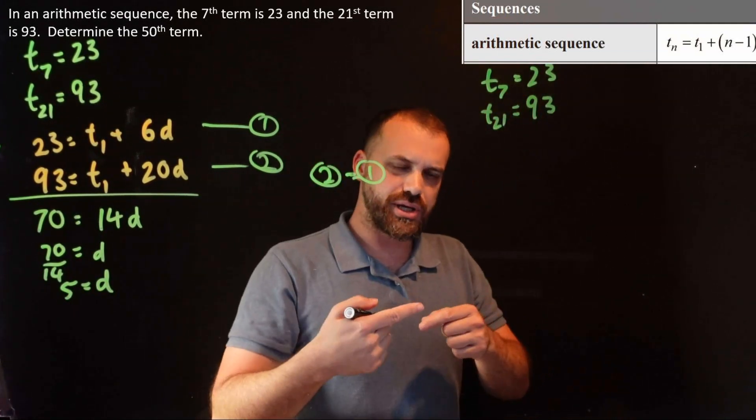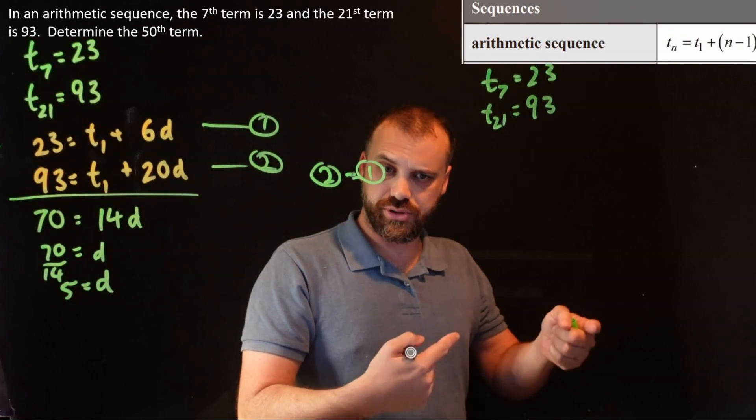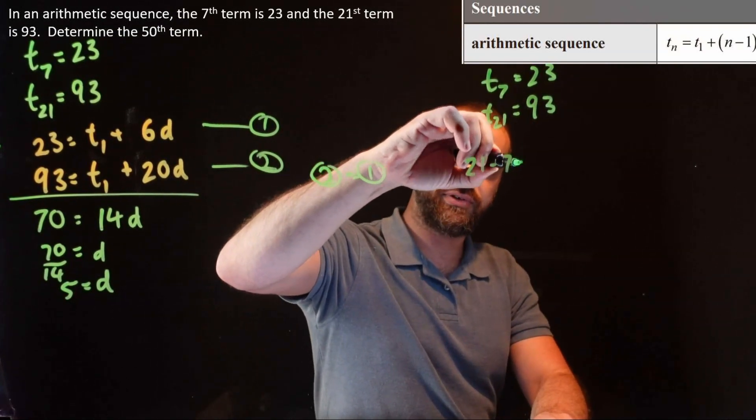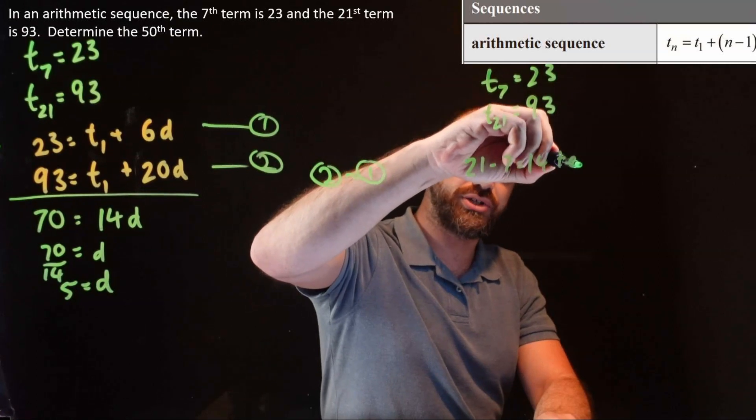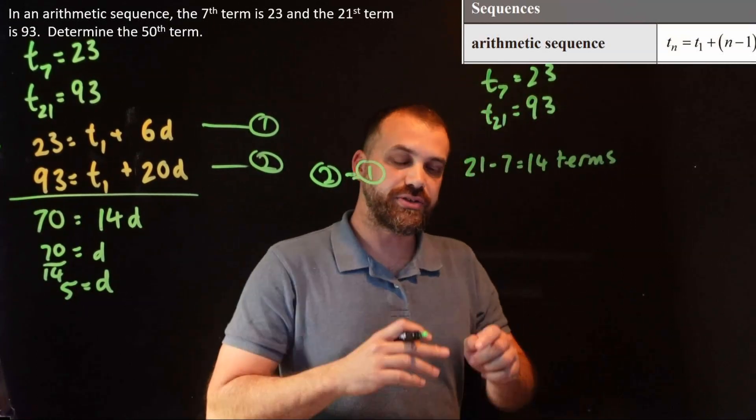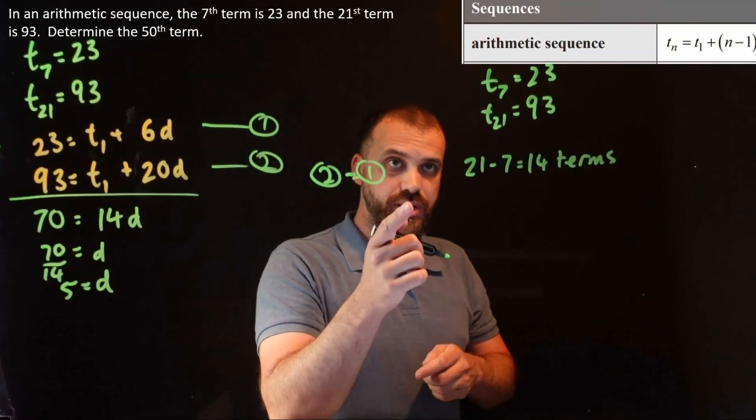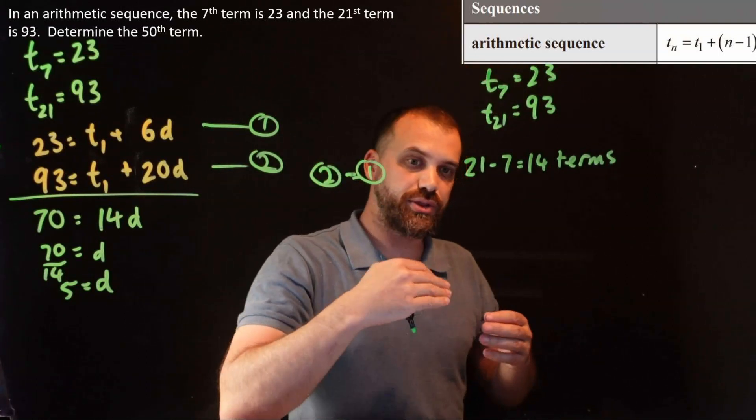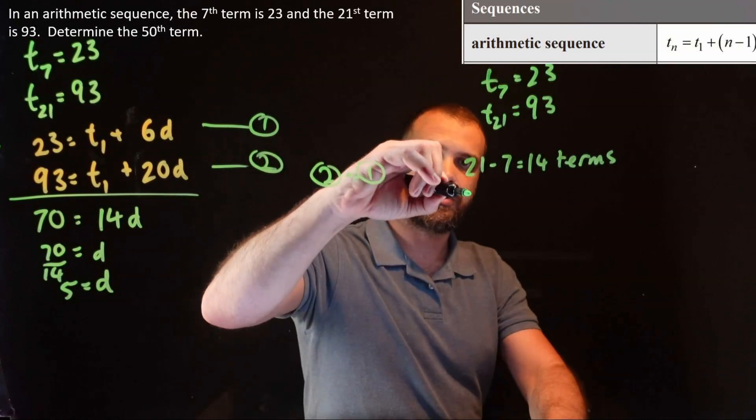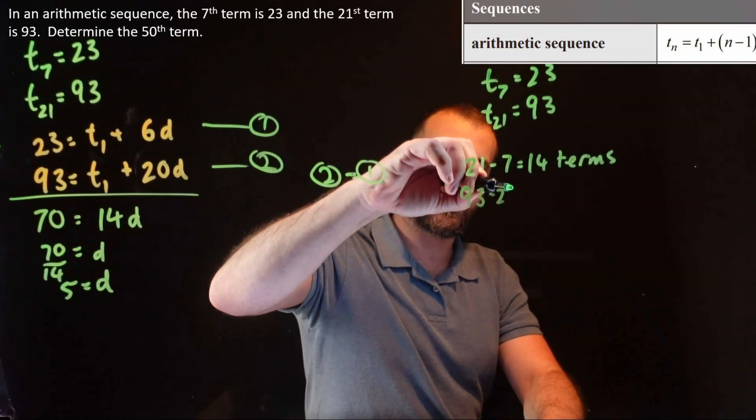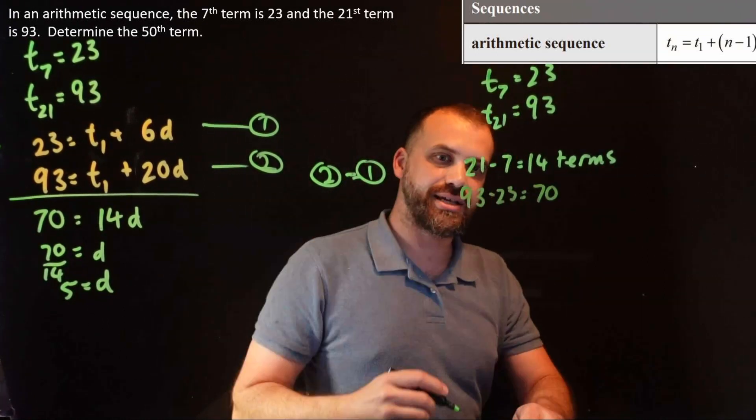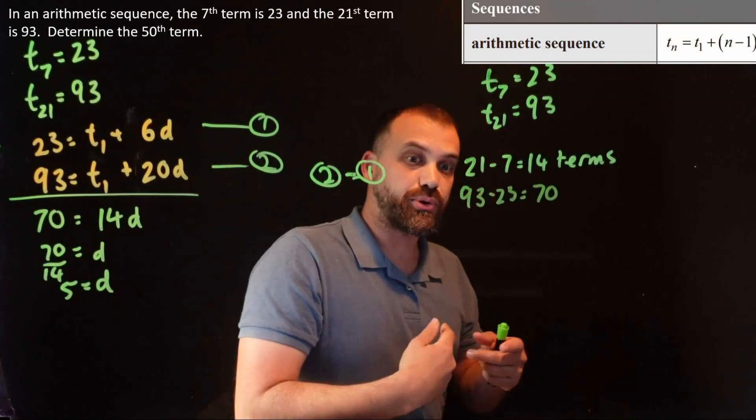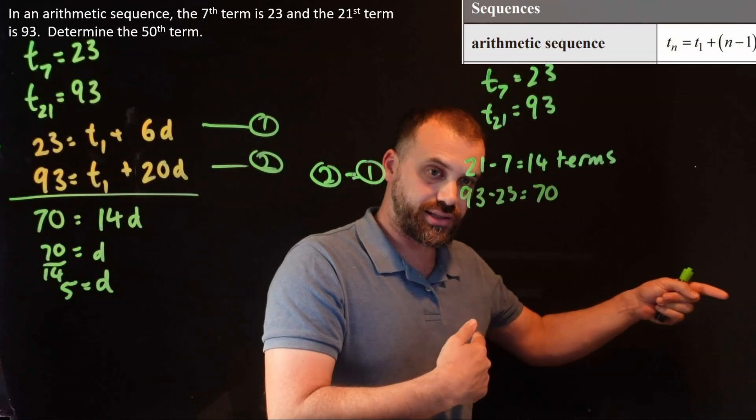Term 7 equals 23 and term 21 equals 93. So how many terms are between term 7 and term 21? Well, 21 minus 7 is 14 terms. There's 14 terms between 21 and 7. Now what's the difference between those 14 terms? Well, there's 93 minus 23, that's 70.